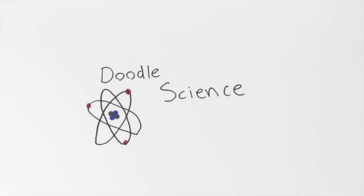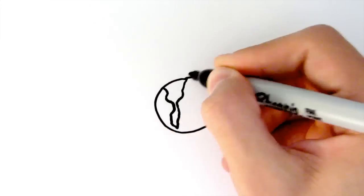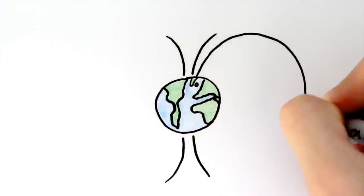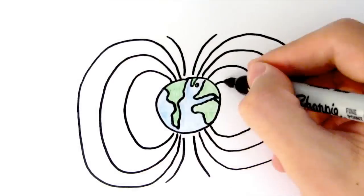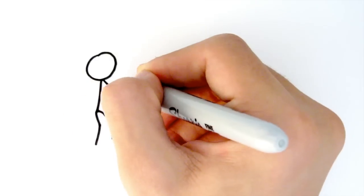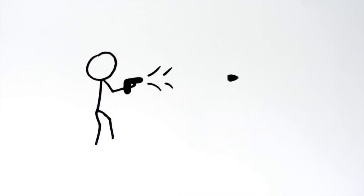There are 10 types of energy. Magnetic, the energy in magnets, electromagnets, and the Earth's magnetic field. Kinetic, the energy in moving objects, like this bullet out of a gun.